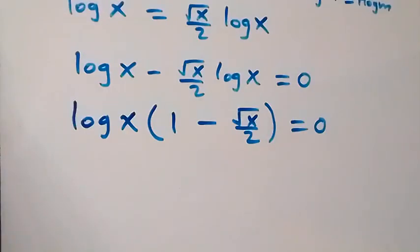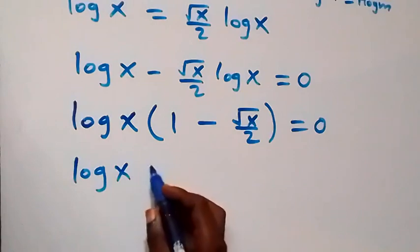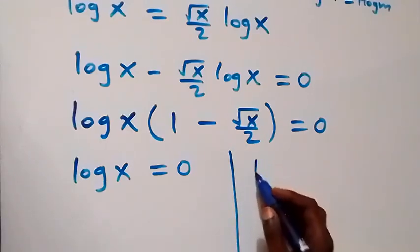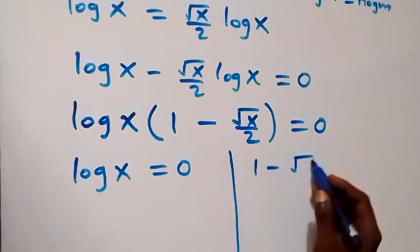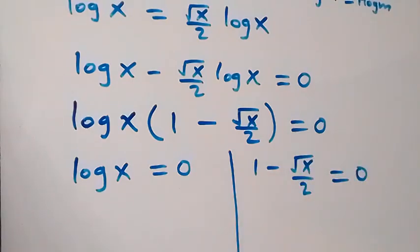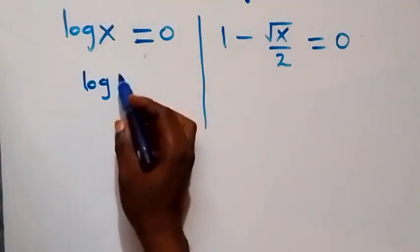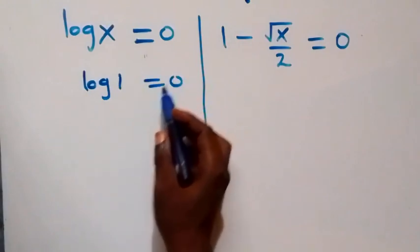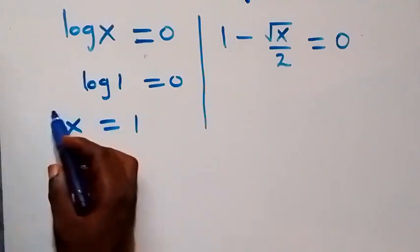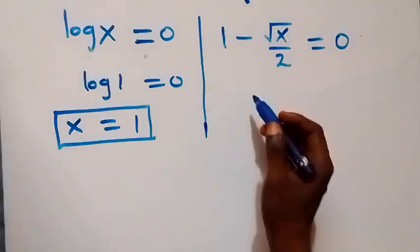This product equals zero, so we have two cases. Case one: log x equals zero. Since log 1 equals zero, this implies x equals 1. So we have x equals 1 as the first solution.